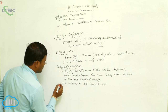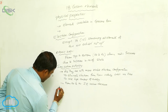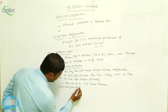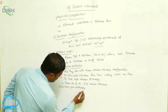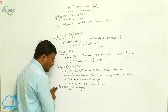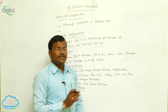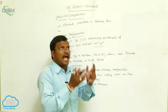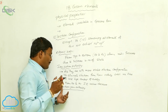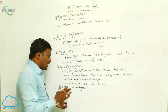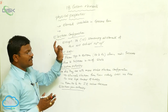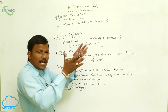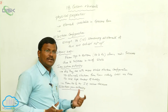Another important physical property of this group is electron gain enthalpy. The same reasoning applies here: since 18th group elements already have a more stable electron configuration, they never readily accept any electron from outside. Hence, the positive electron gain enthalpy values are very high for 18th group elements. From top to bottom — Helium to Krypton — as atomic size increases, electron gain enthalpy values decrease.